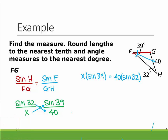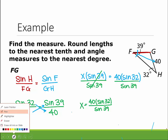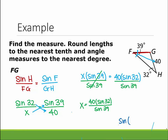To get X by itself, divide both sides by sine of 39. So X equals 40 times the sine of 32, all divided by the sine of 39. Be careful when you type this in your calculator — sine automatically throws up a parenthesis, so when you type sine of 32, close the parenthesis before you hit the division bar to type sine of 39. Otherwise it will take the sine of the sine, which we don't want. So 40 times sine of 32, close parenthesis, divided by sine of 39, close parenthesis — and we end up with 33.7. That's how big FG is.